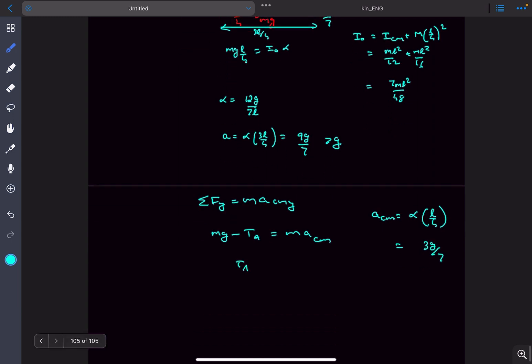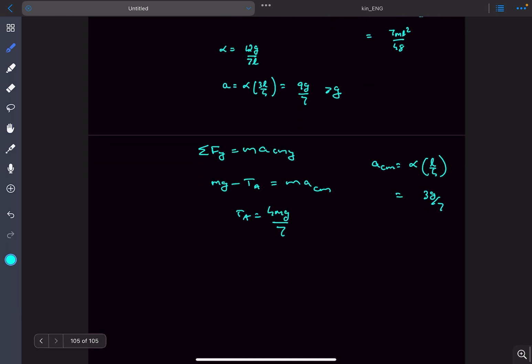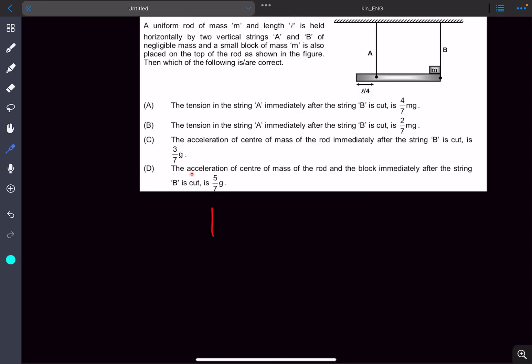From here tension T_A will come out to be 4 Mg by 7. In the third option we had to determine the acceleration of center of mass which we already determined.